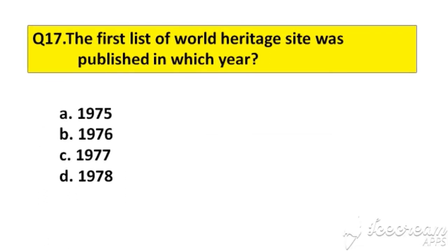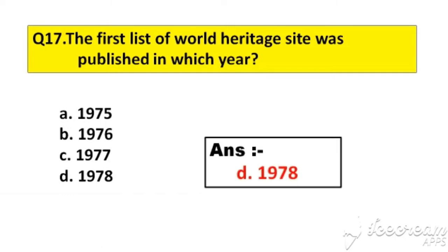Question number 17. The first list of World Heritage sites was published in which year? Option A: 1975. B: 1976. C: 1977. D: 1978. The right answer is option D, 1978.